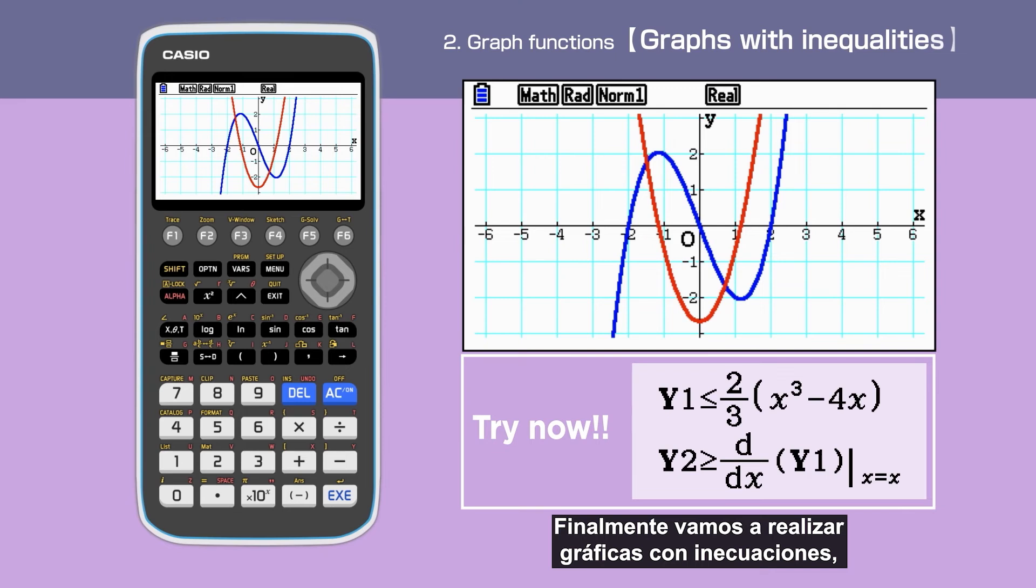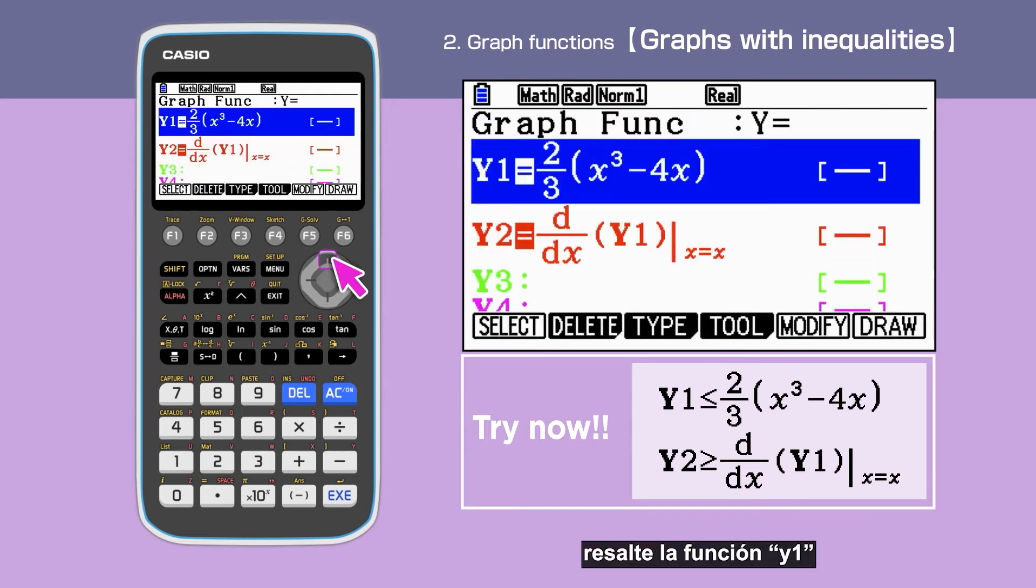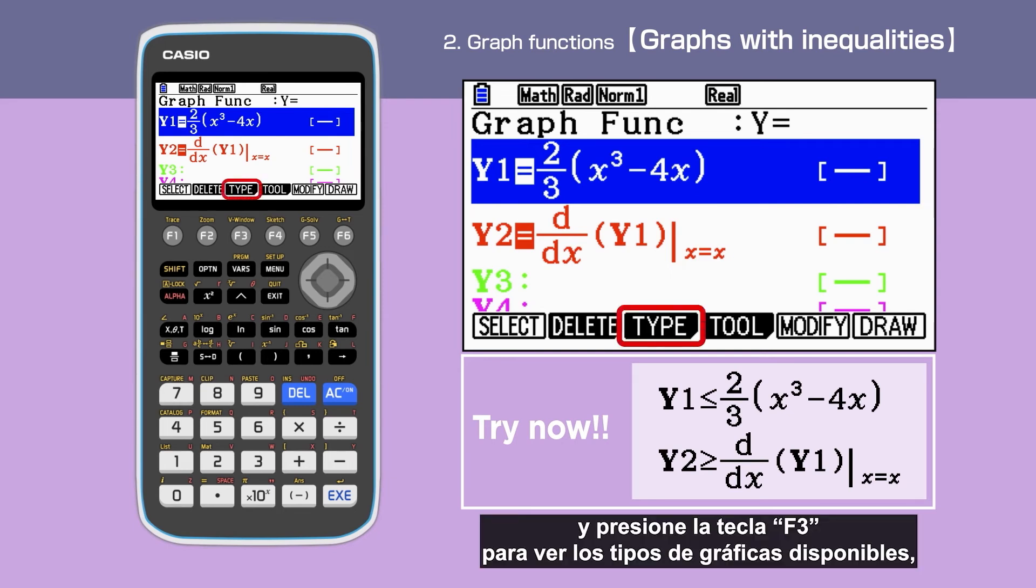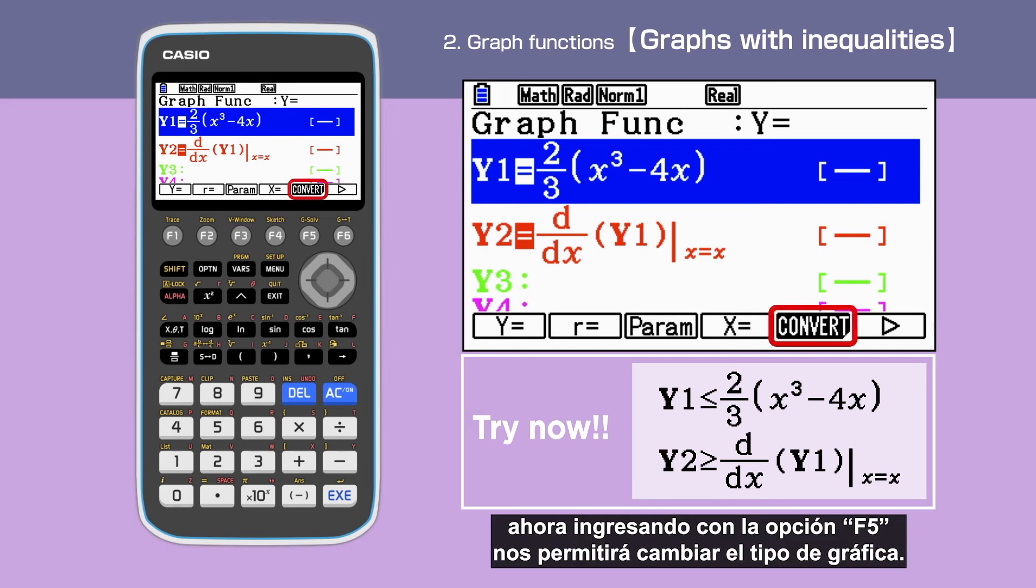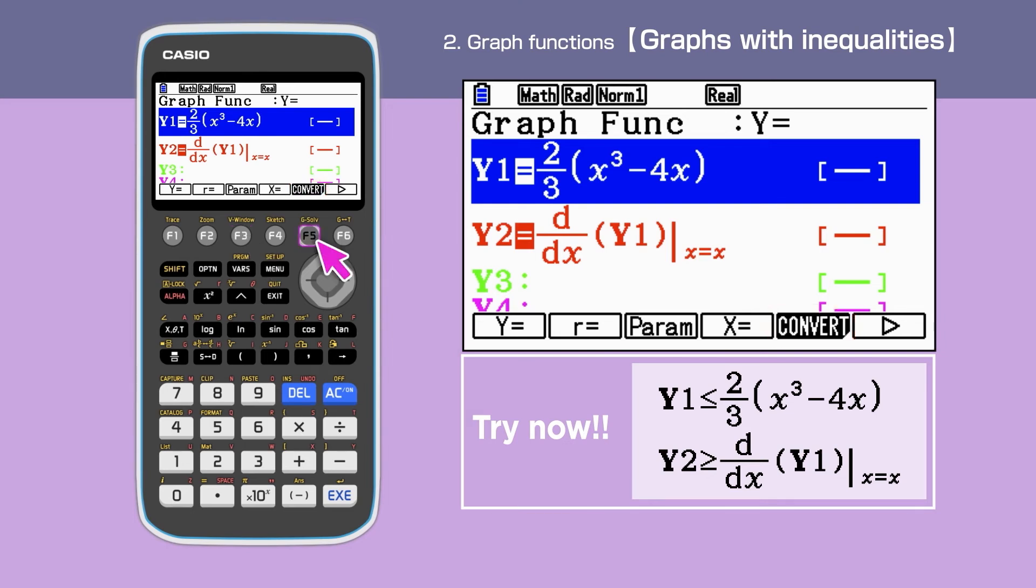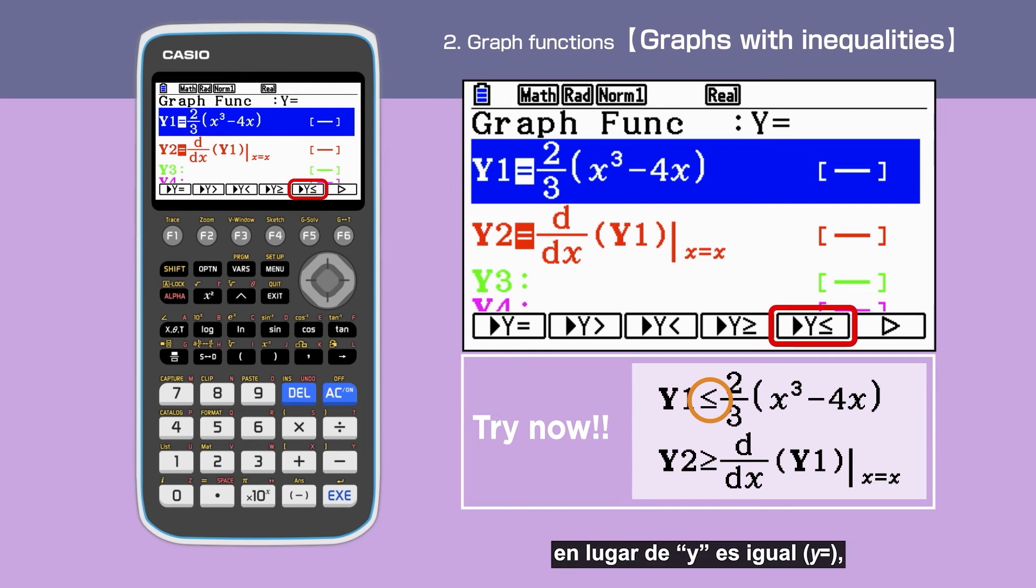Lastly, we are drawing graphs with inequalities. Go back to the graph function screen by pressing Exit. Highlight the y1 function. Press F3 to display the graph type command. Entering F5 allows us to change graph type. For this example, we choose to change y is smaller than or equal to instead of y equal. This can be done by pressing F5.